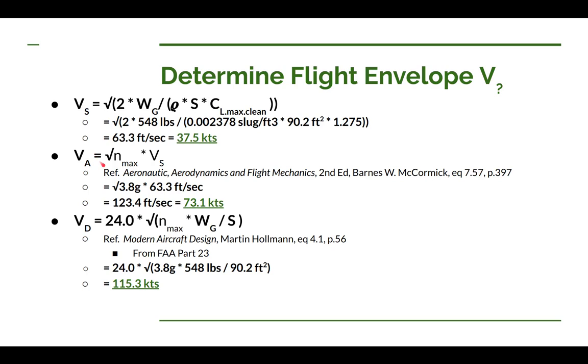For the maneuvering speed, if you don't have some specific need, there are some recommendations you can use. I used the Aeronautics, Aerodynamics and Flight Mechanics book second edition from McCormick, equation 7.57 on page 397. You take the square root of your load limit and multiply it by your stall speed. That's our 3.8 G multiplied by our V sub S in feet per second, which is 63.3. Converting it to knots we get 73.1 knots.